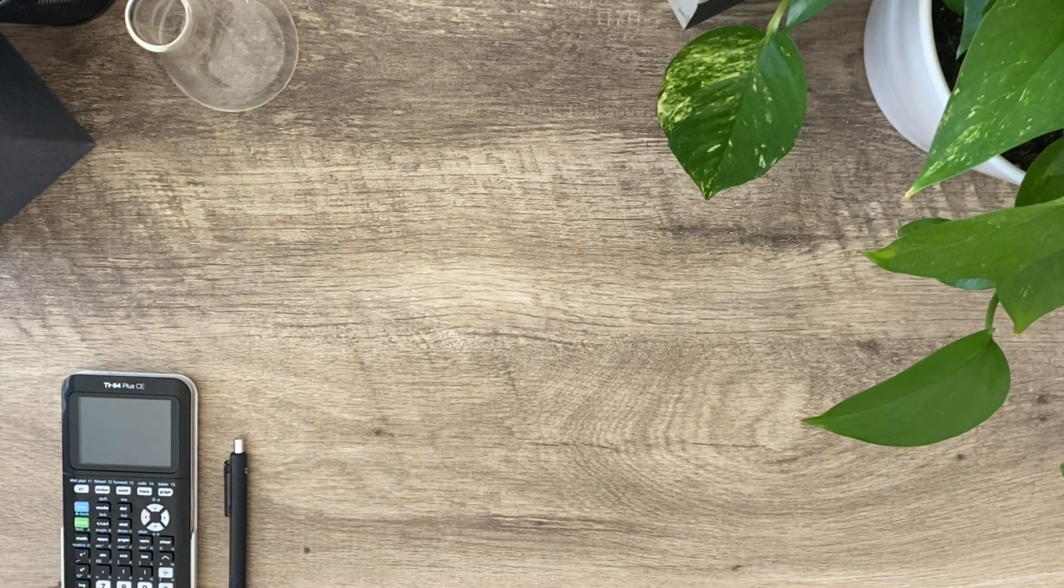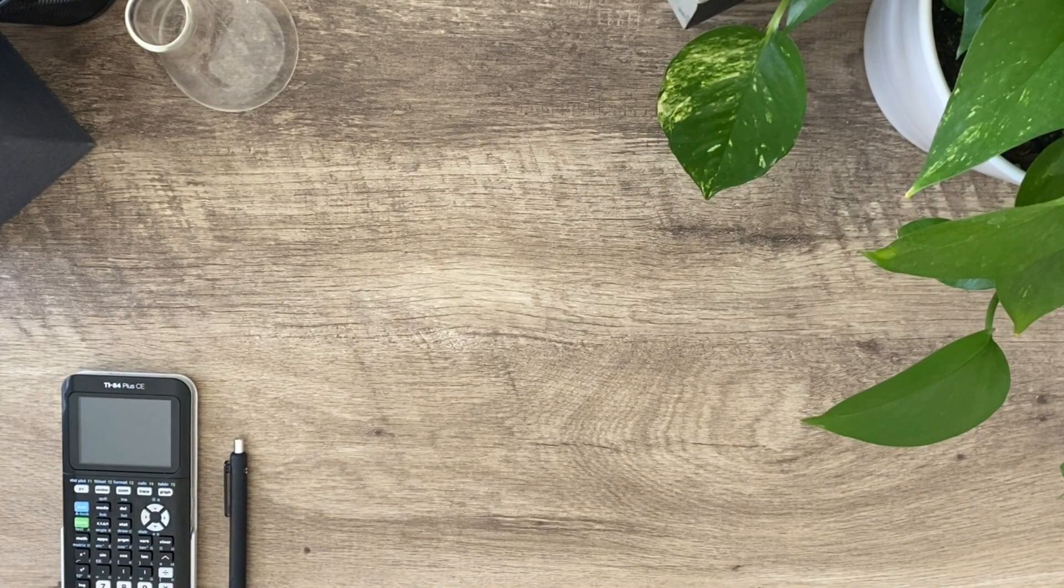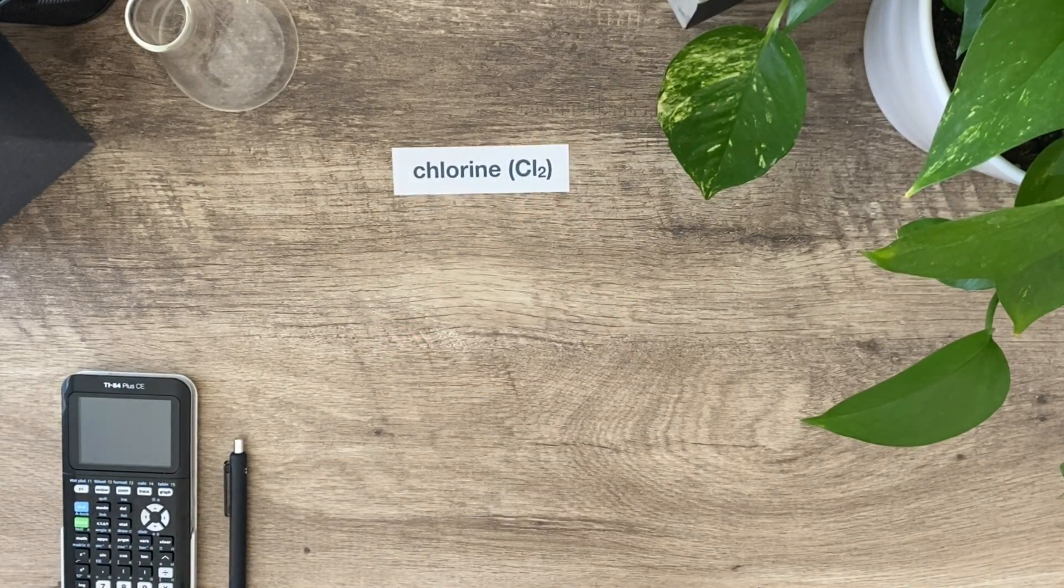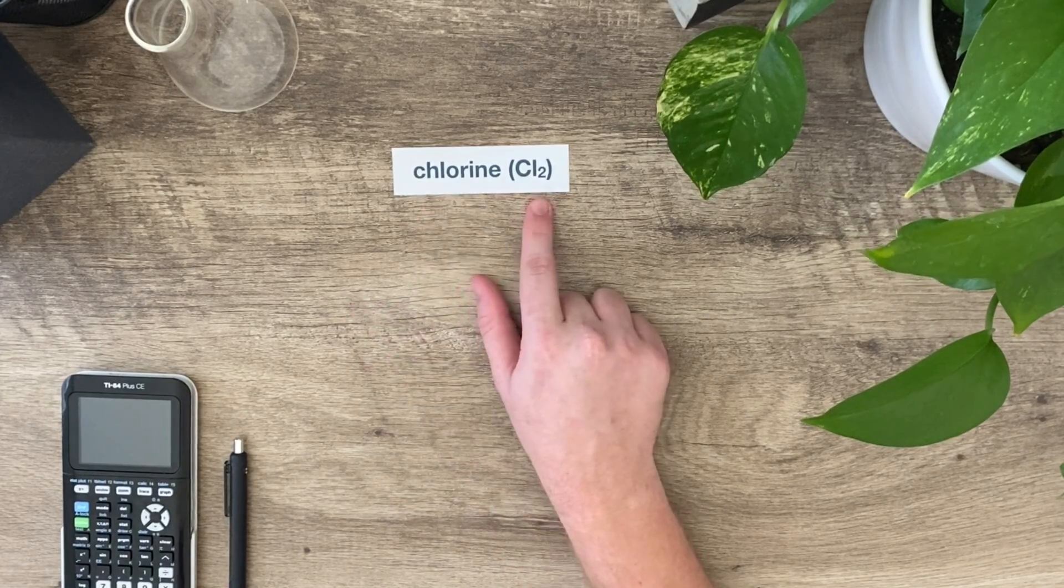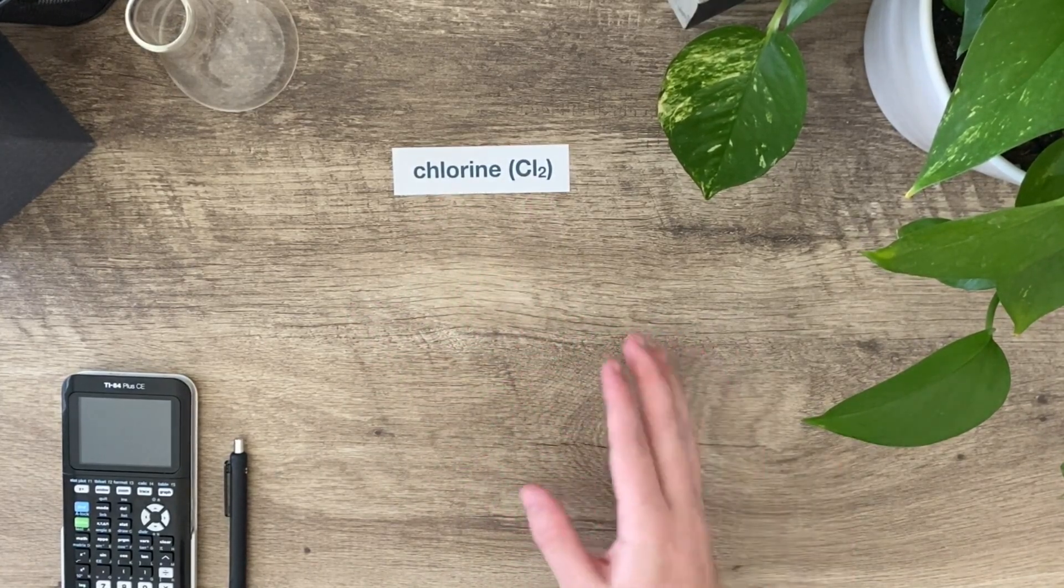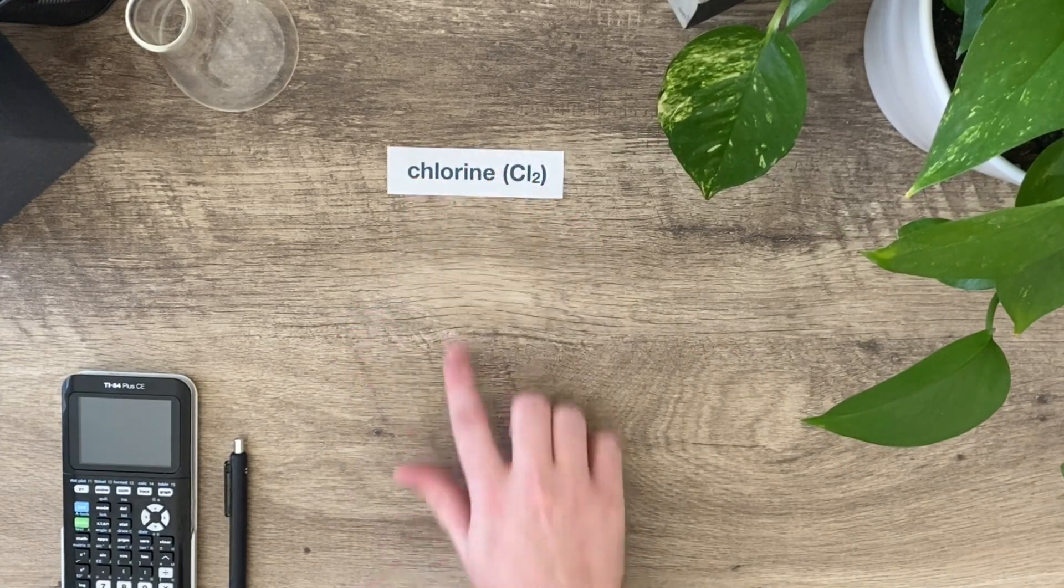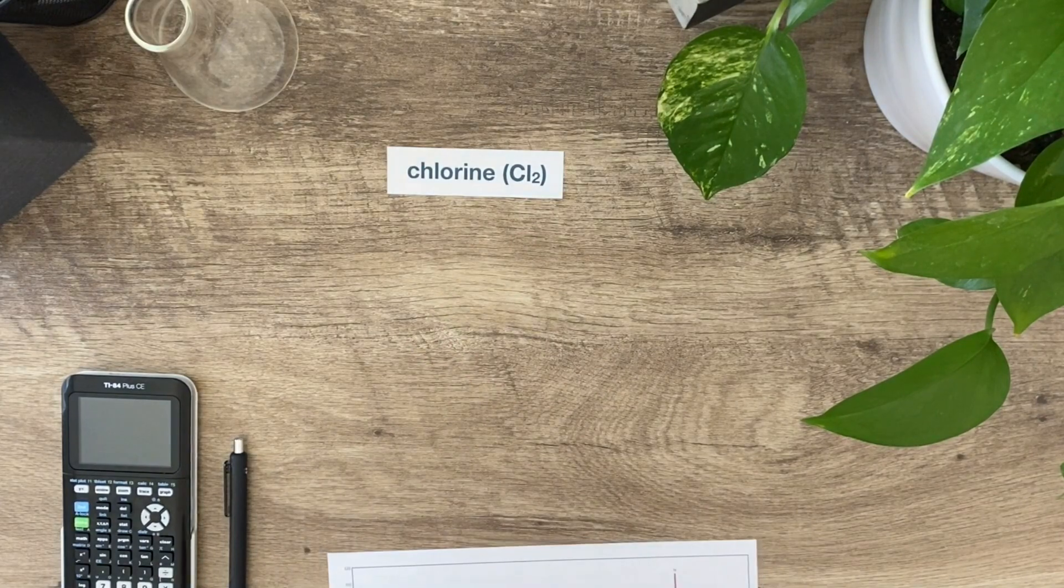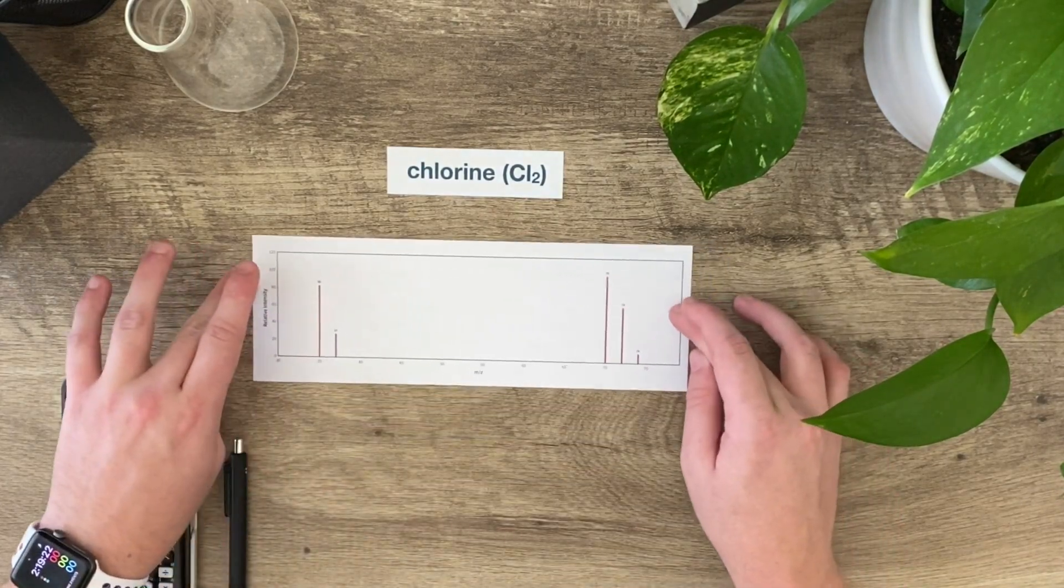Let's take a look at an example spectrum for chlorine. Pay attention, chlorine I chose on purpose because chlorine is a diatomic, which means that when you pull a sample of air or wherever you might be finding chlorine gas, it's not going to be just Cl by itself, it's going to be Cl2.